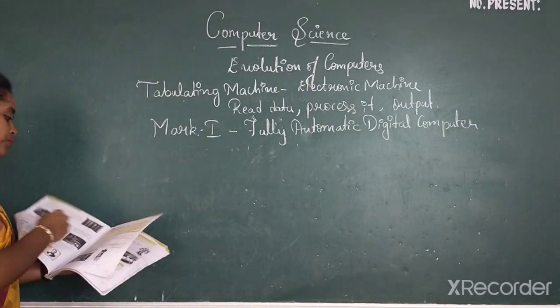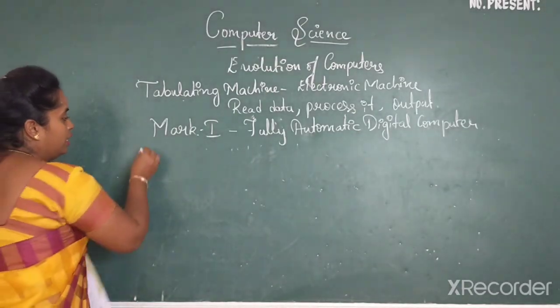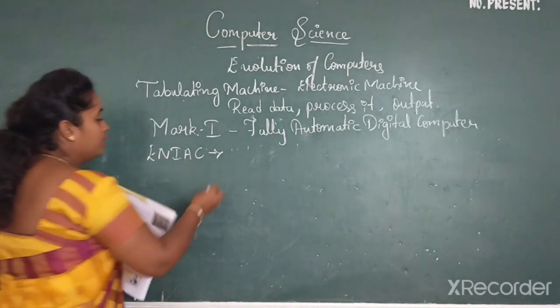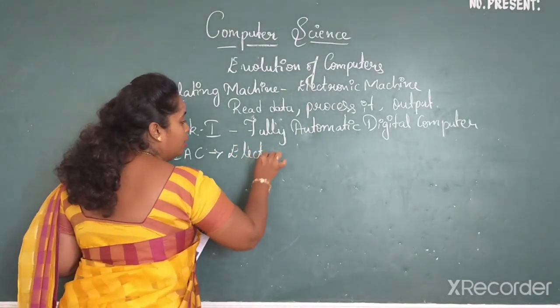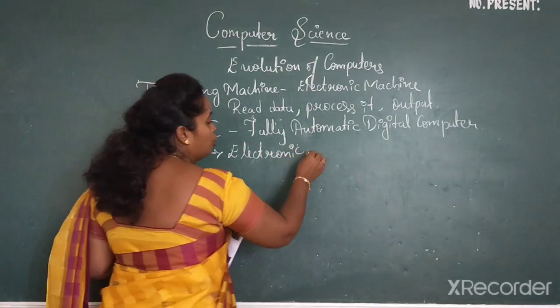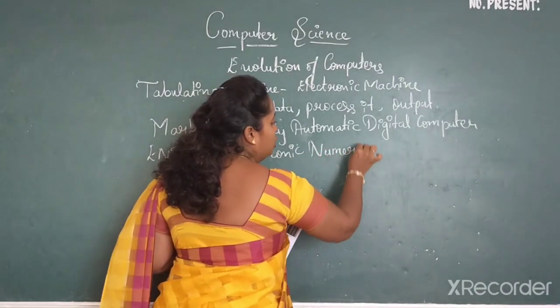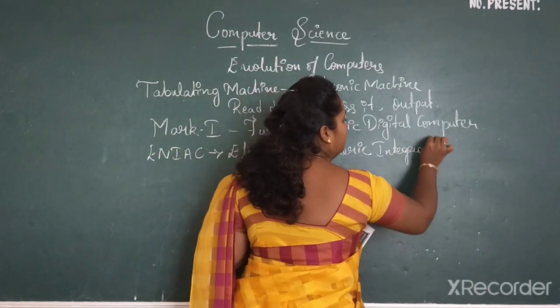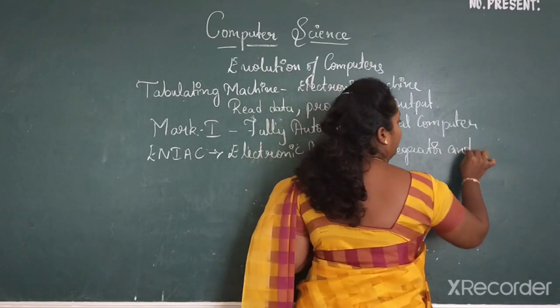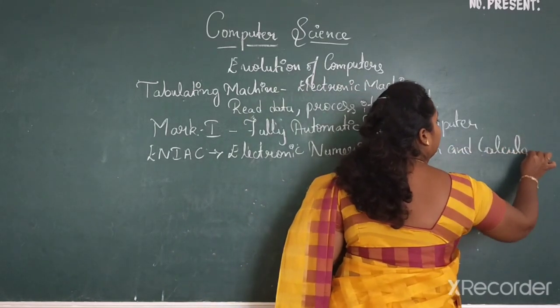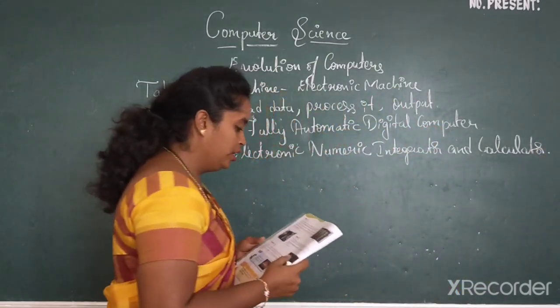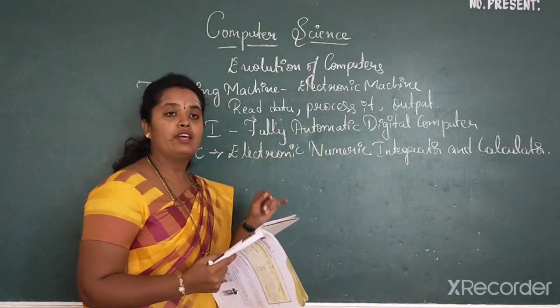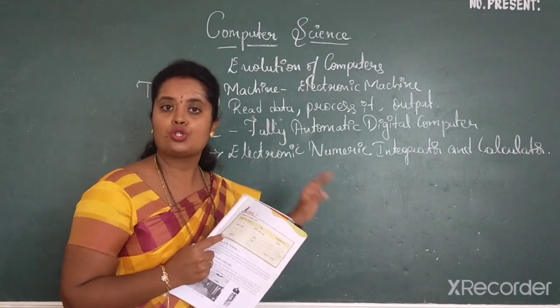Now there comes your ENIAC. What is this ENIAC? Electronic numeric integrator and calculator. This was the first electronic general purpose computer where 18,000 vacuum tubes were used to do this.